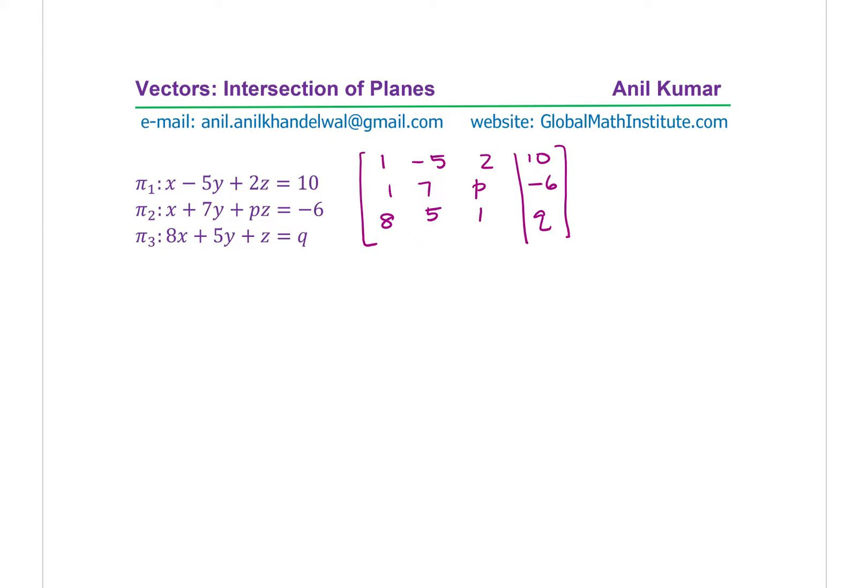First step should be to get zeros for these two positions. To get these zeros, we will do R2 minus R1. But since we want P to be positive, let's copy the first row as such: 1, -5, 2, 10. Now we do R2 minus R1. So 1 minus 1 is 0, 5 minus (-5) is 12, and we get P minus 2. -6 minus 10 gives us -16.